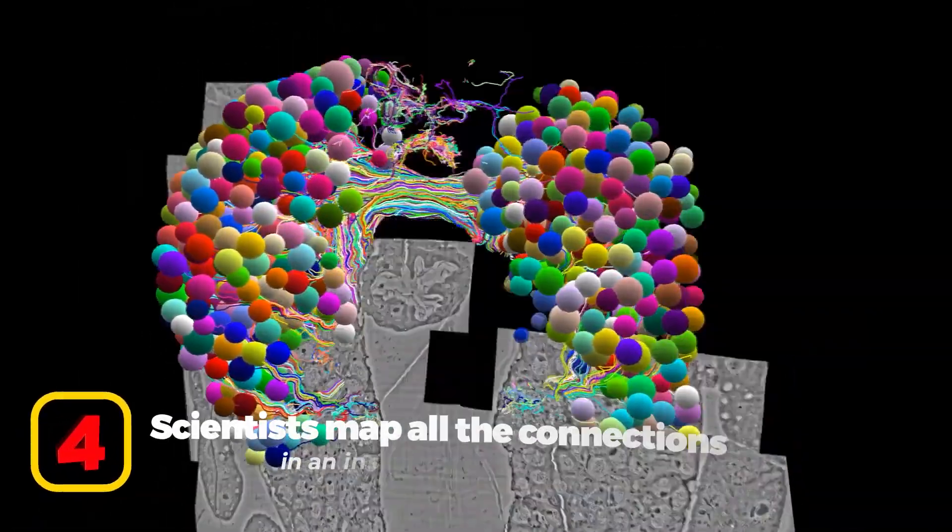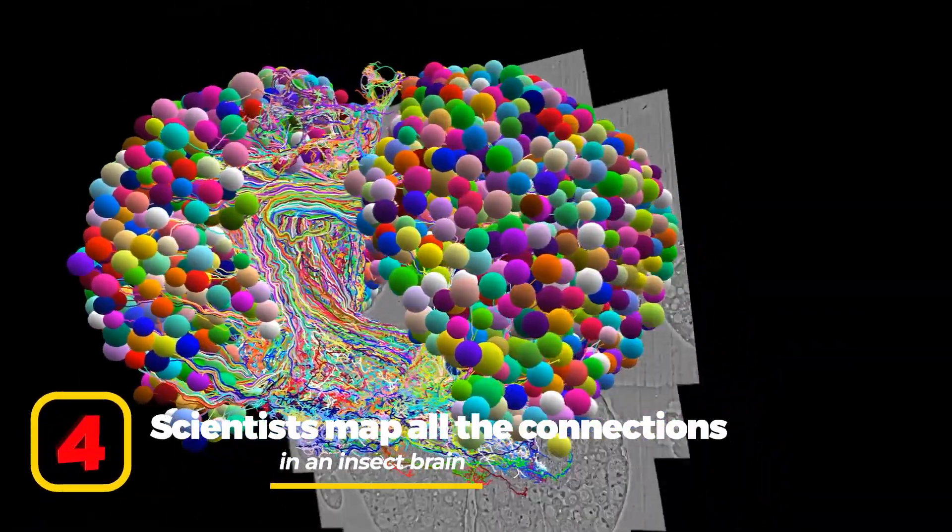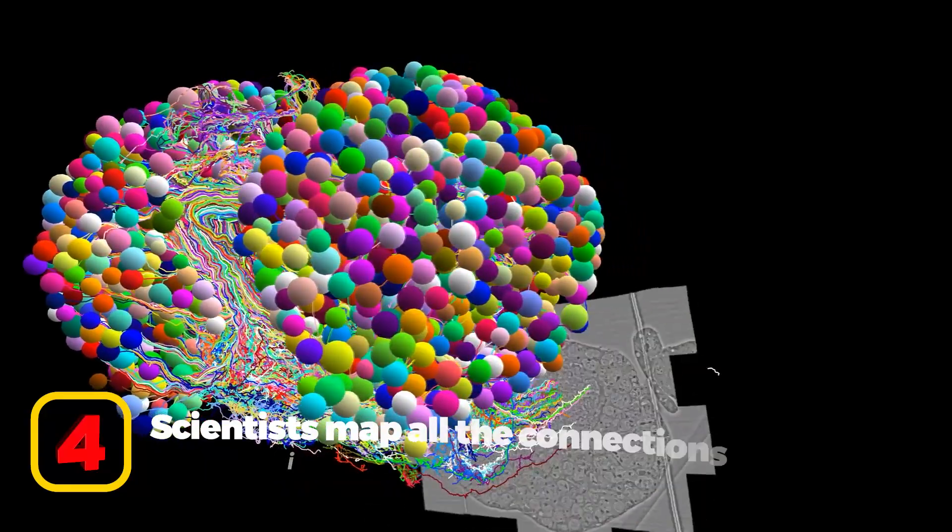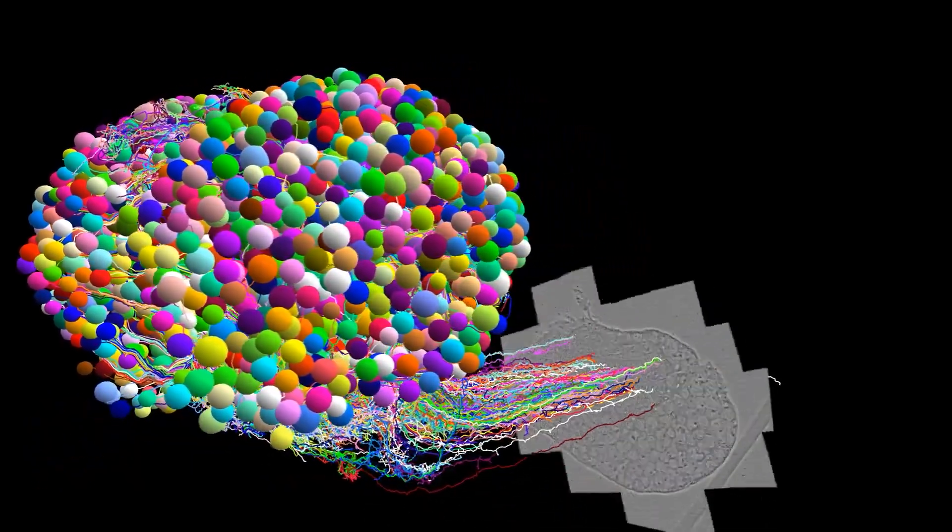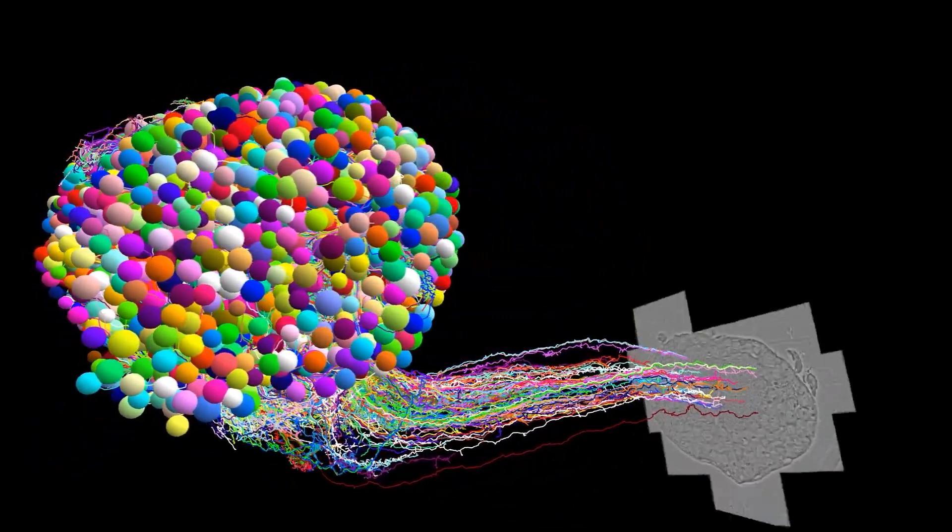Number 4: Scientists map all the connections in an insect brain. Scientists have produced the first complete brain wiring diagram of an insect brain.